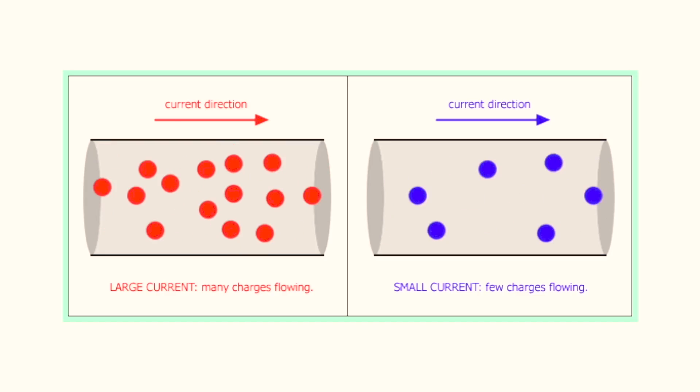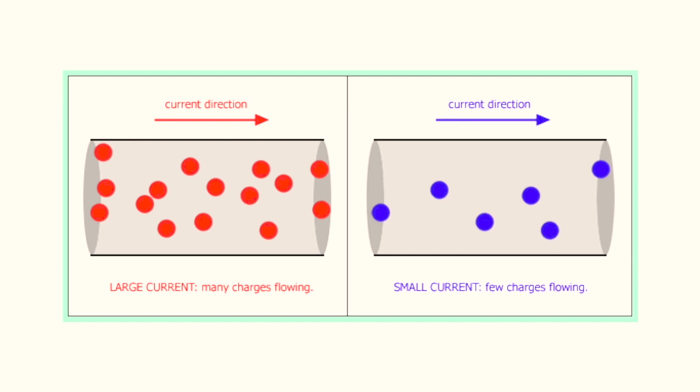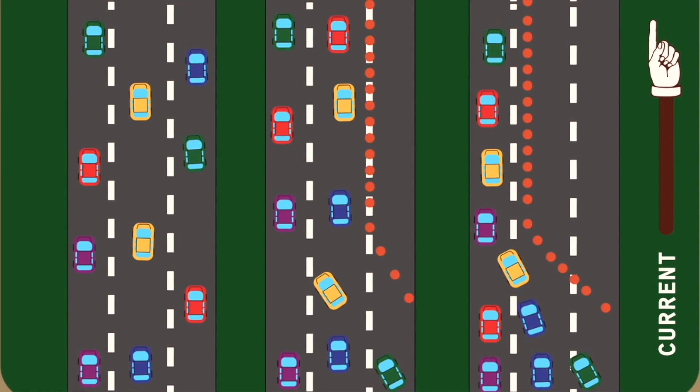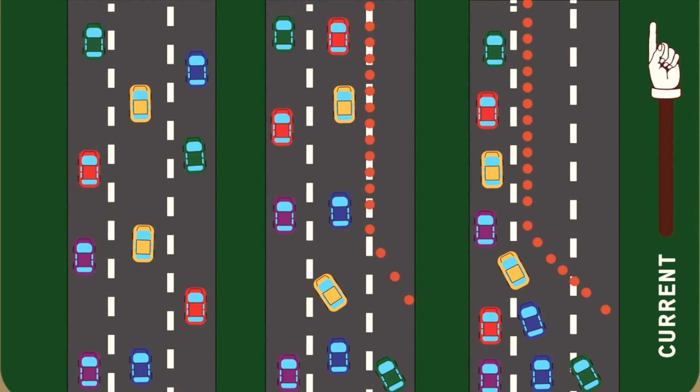Now let's go back to the coils. Earlier I said that a coil's number of turns and thickness affected its induced voltage and current. If we think of a wire as a highway, a thinner wire would be like a two-lane road, and a thicker wire would be like a six-lane road. The six-lane road can support more cars, so thicker wires for the same voltage can support a higher current.